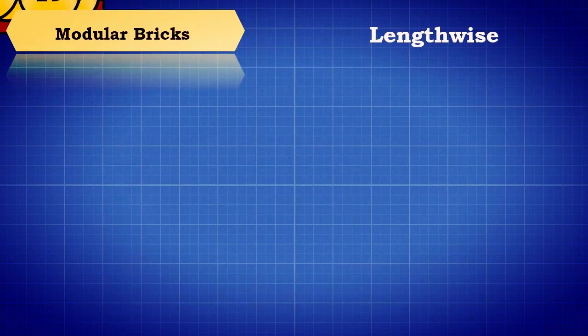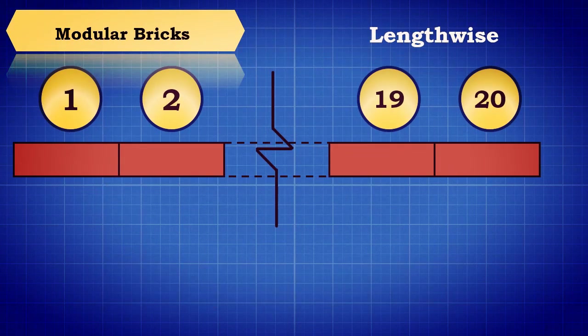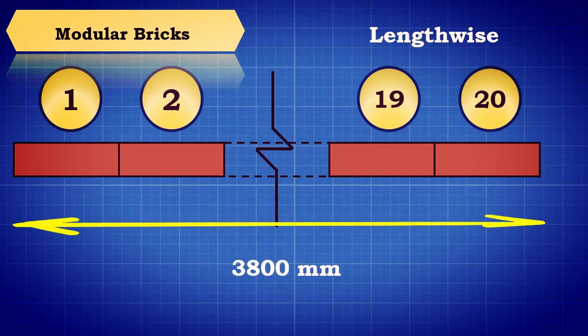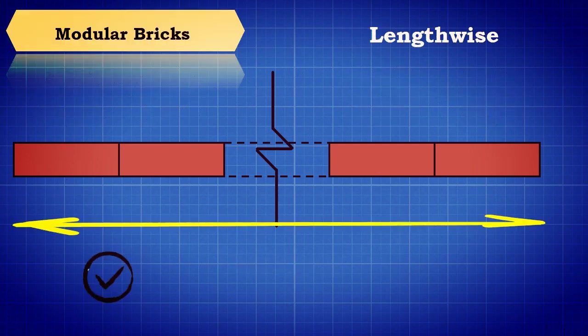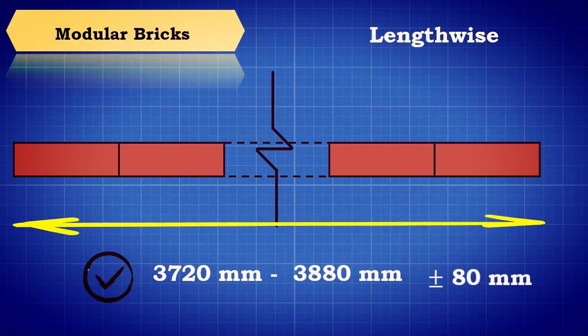In modular bricks, when placed lengthwise, the total length should be 3800 mm. The tolerance limit of acceptance is between 3720 mm and 3880 mm, that is plus or minus 80 mm.